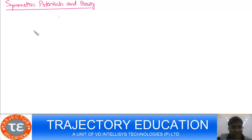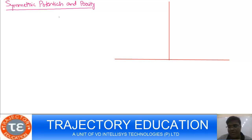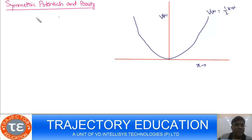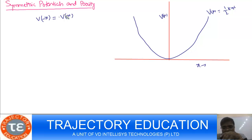Many times the potential distribution we come across in microscopic or quantum systems is symmetric. Symmetric means the potential is of a certain kind. For example, a parabolic potential V(x) defined as half kx squared. Symmetric means V at minus x is the same as V at x. So this is a symmetric potential.